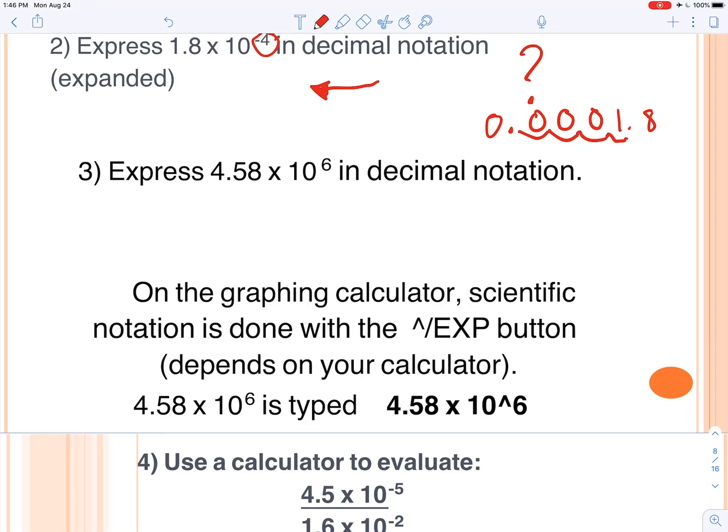And then if we want a big number like this, we're going to move the decimal to the right and make it into a big number. So go ahead and answer this one. What's the number we're going to get here? 1, 2, 3, 4, 5, 6. 4, 5, 8, 0, 0, 0, 0. And that's our final answer for that.